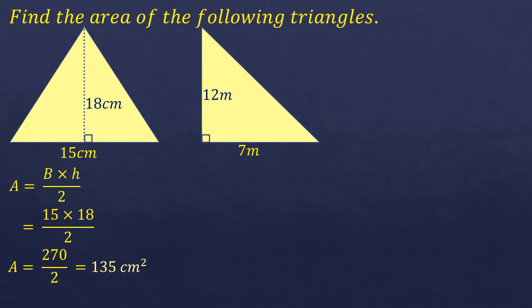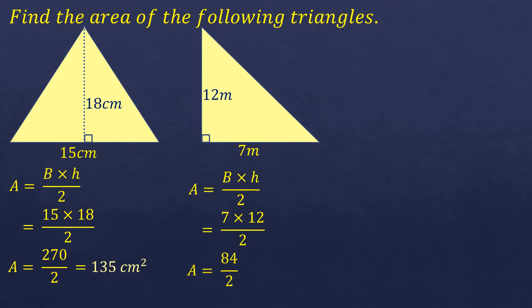Another triangle with a base of 7 meters and a height of 12 meters. The formula for the area of a triangle is base times height divided by 2. So base is 7, height is 12. 7 times 12 is 84, divided by 2 is 42. The answer is 42 square meters.